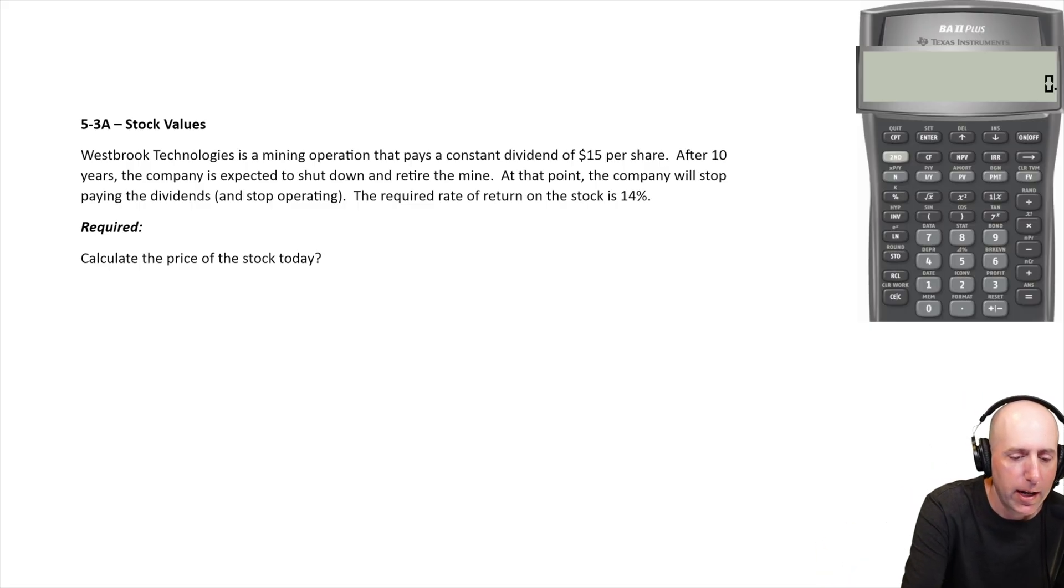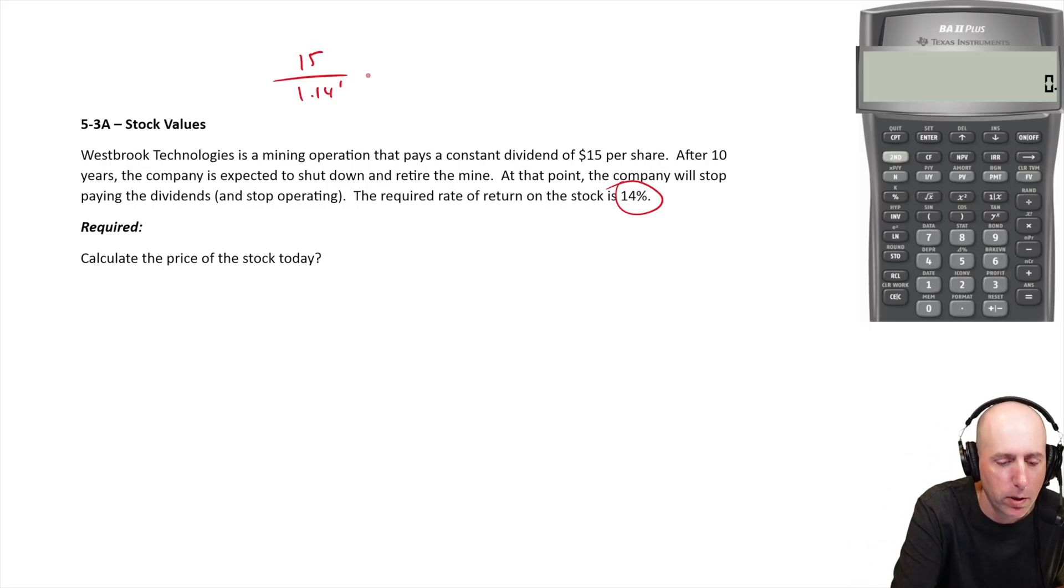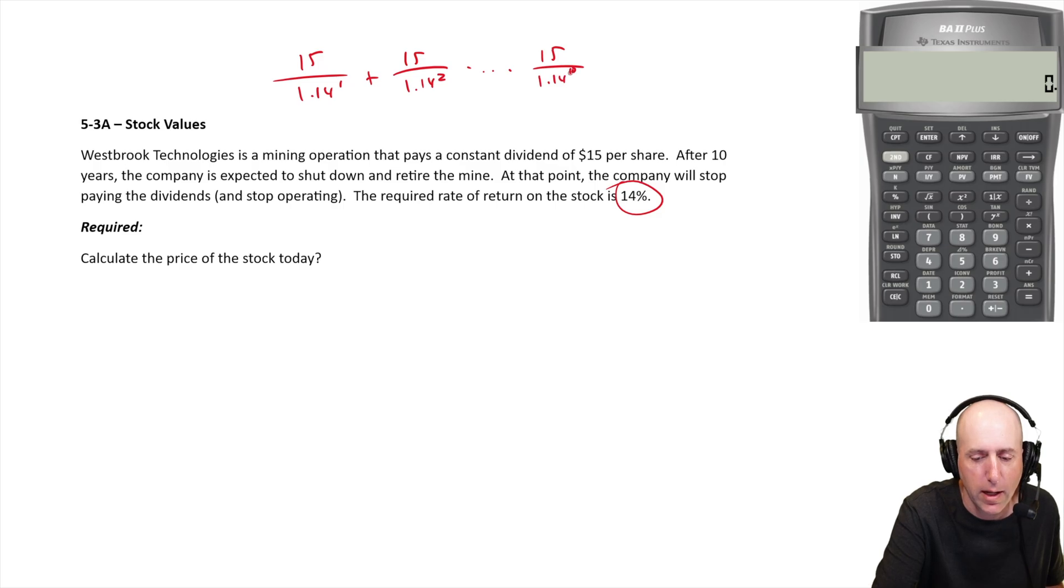Here's what's happening: we're going to get a $15 dividend in a year, so $15 divided by 1.14 to the power of one. In two years we're going to get again a $15 dividend, so $15 divided by 1.14 to the two. Do that all the way up to 10, 1.14 to the 10, and then it stops and the company's dead.